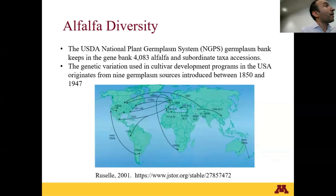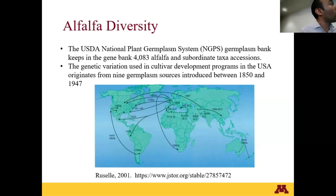To have a reference of the diversity of alfalfa, we need to know that alfalfa has been incorporated — or imported — into the USA relatively recently, from different regions, but mainly from nine different germplasm sources since 1850 to 1940, from Europe, Asia, and South America.